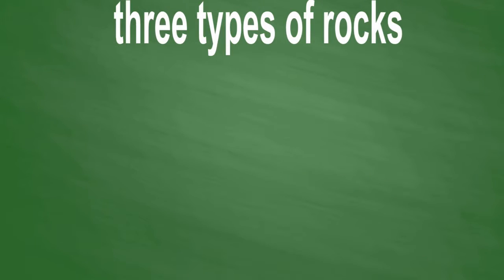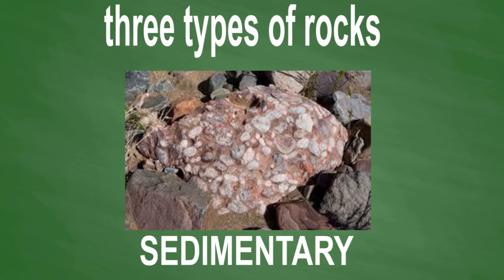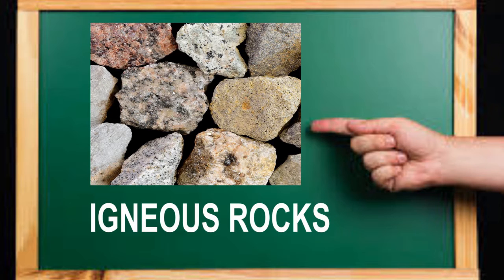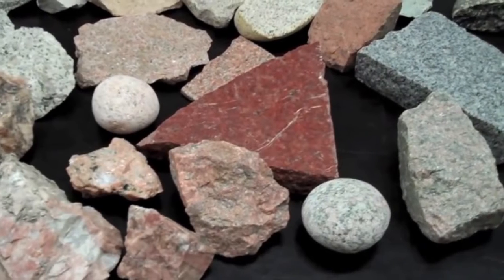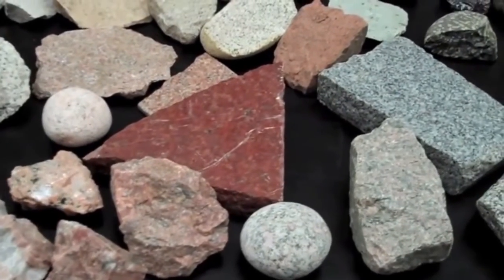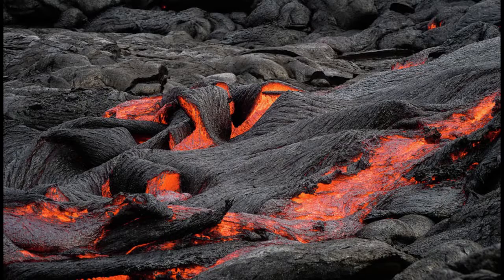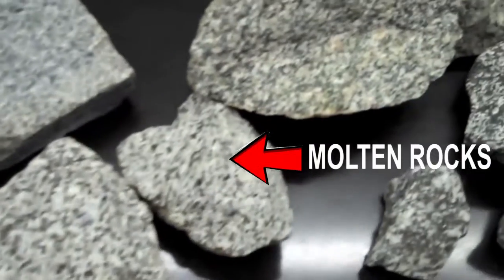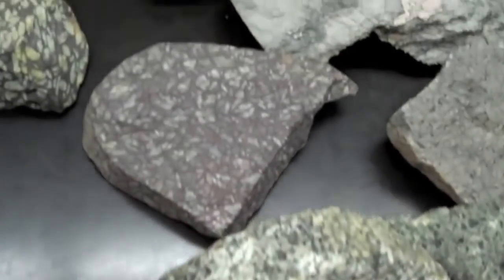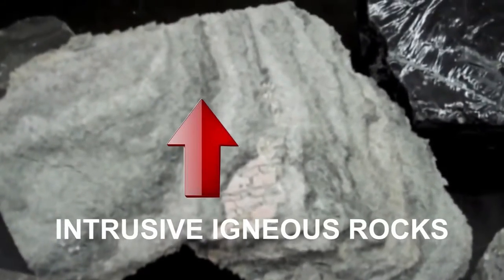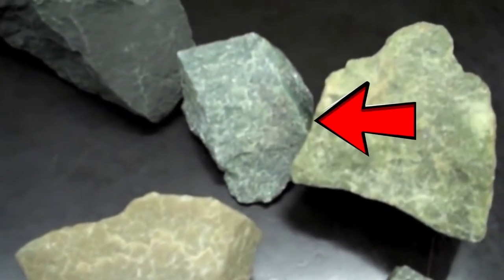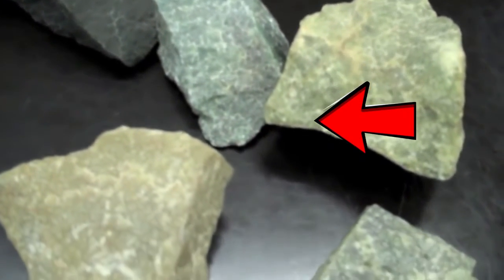Geologists typically classify rocks according to how they are formed. There are three types of rocks: igneous, sedimentary, and metamorphic rocks. Igneous rocks are formed from molten rocks — the rocks underneath the earth that come out through the volcano. They can be classified into two types: intrusive igneous rocks and extrusive igneous rocks.